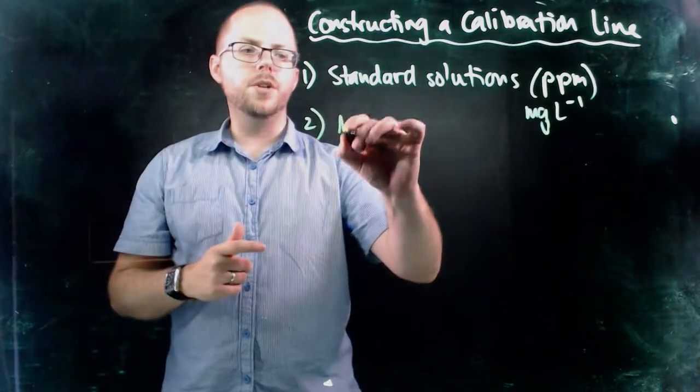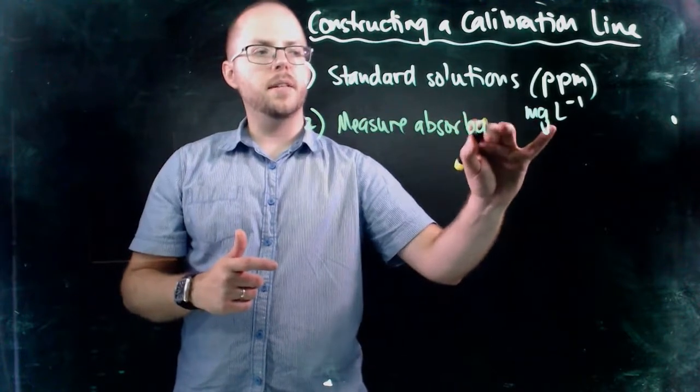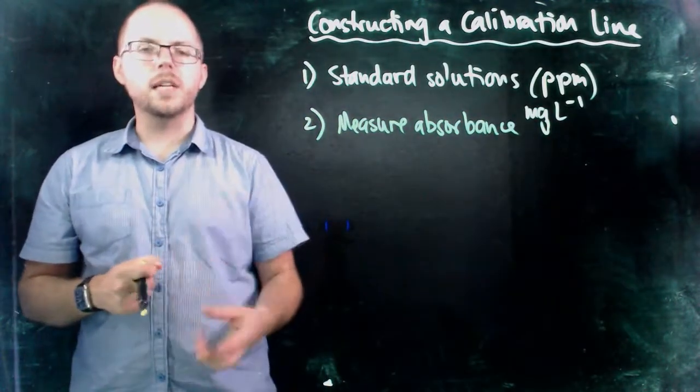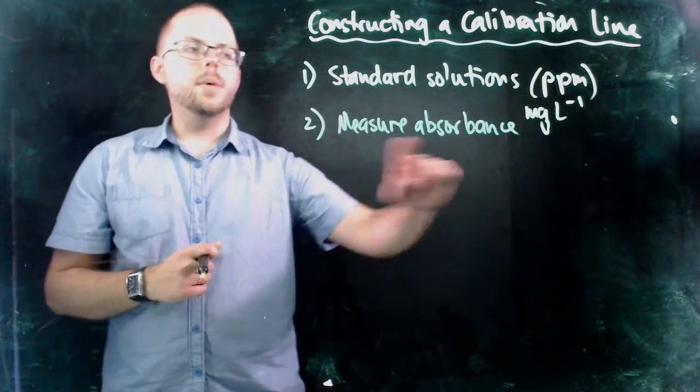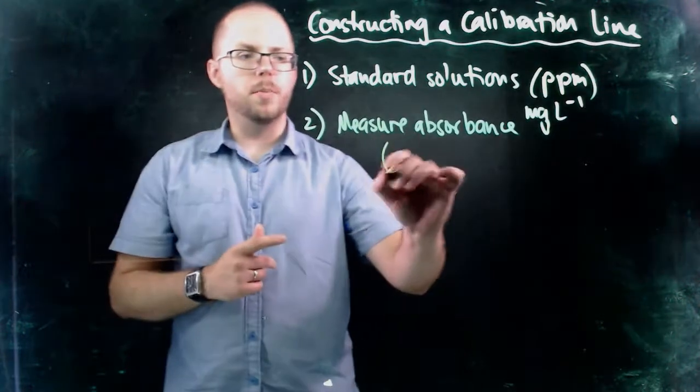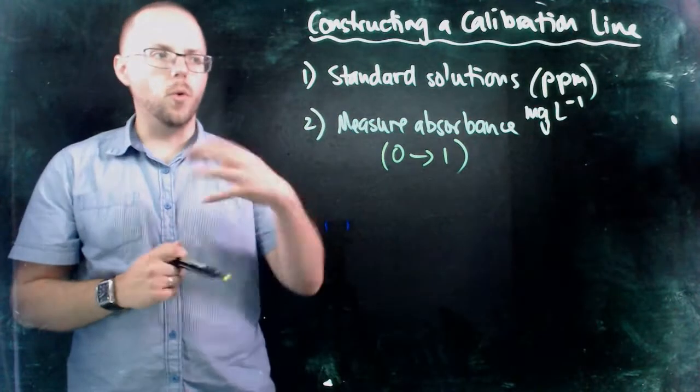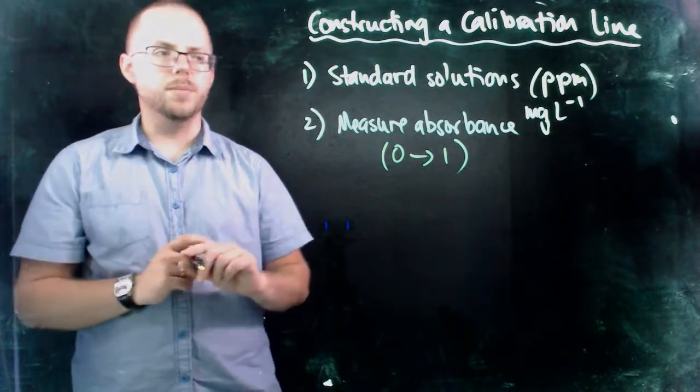The next thing that we're doing is that we measure the absorbance of our samples. So we place them into our AAS instrument one at a time. We measure the absorbance, so how much light of that known wavelength is absorbed by our sample. So remember that it's a value between zero and one. One being 100% absorbance, so all the light is absorbed. Zero being zero absorbance, so none of the light is absorbed.